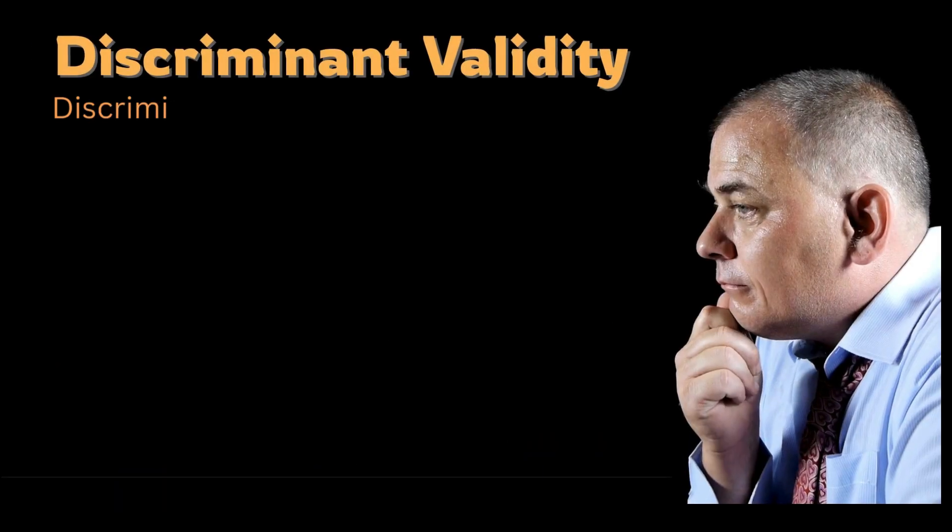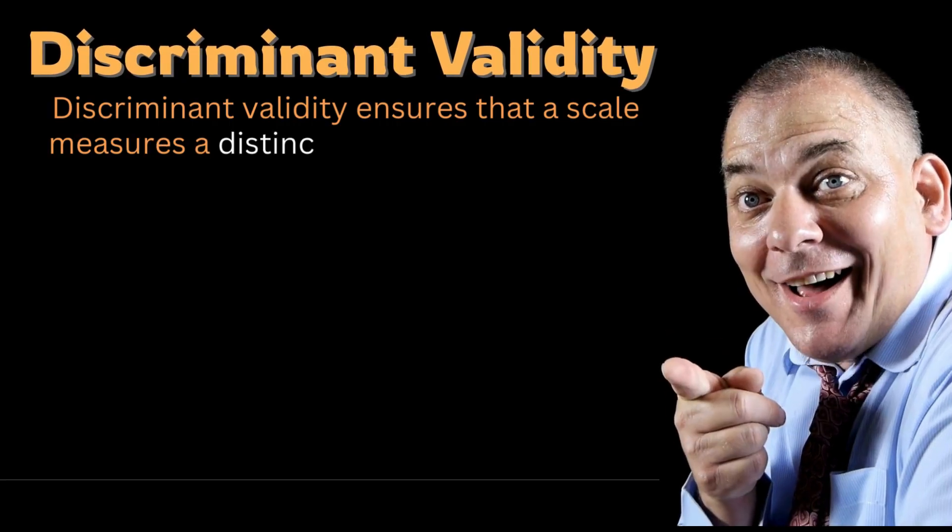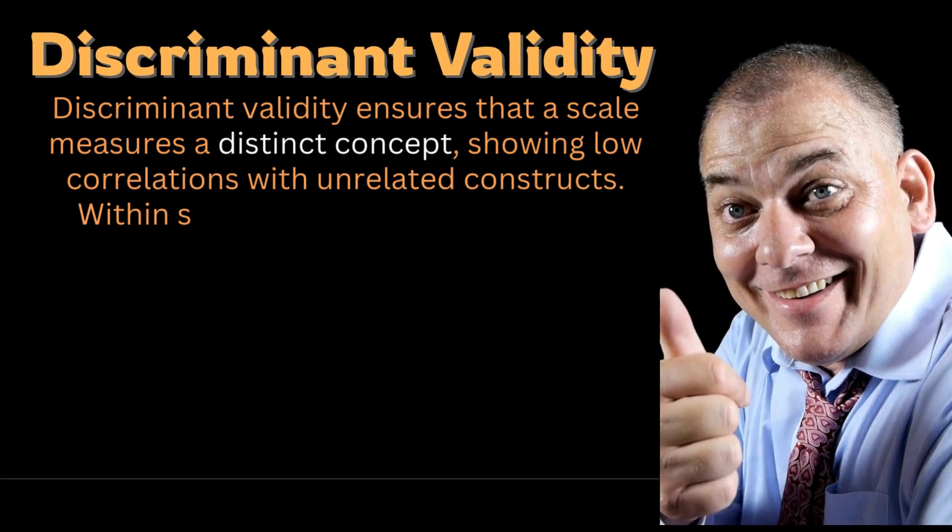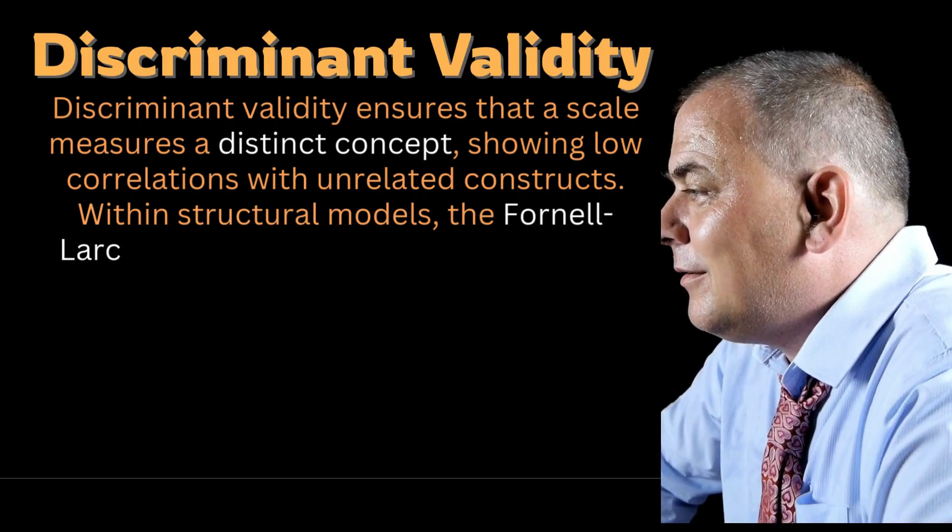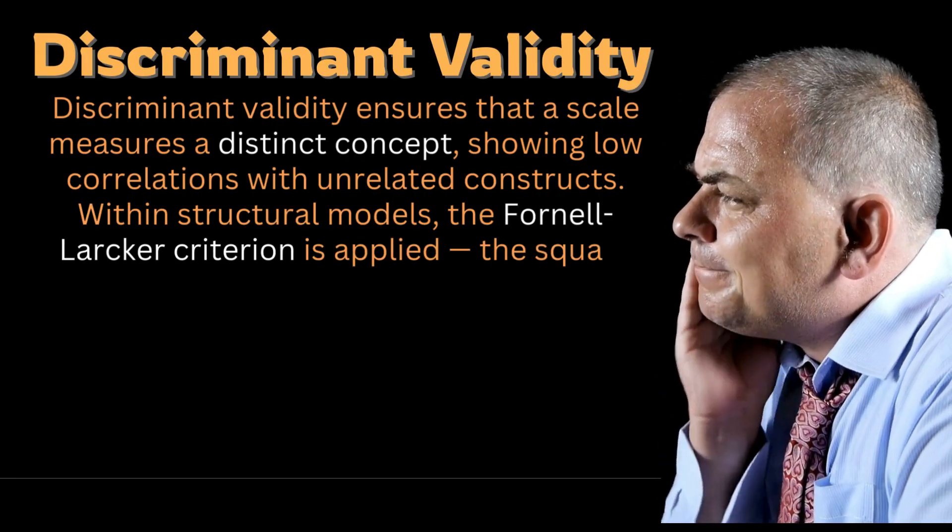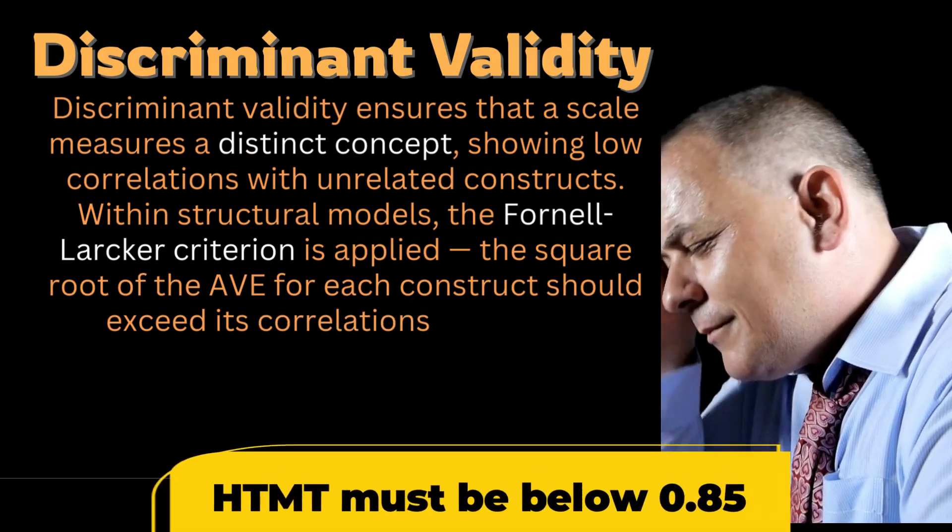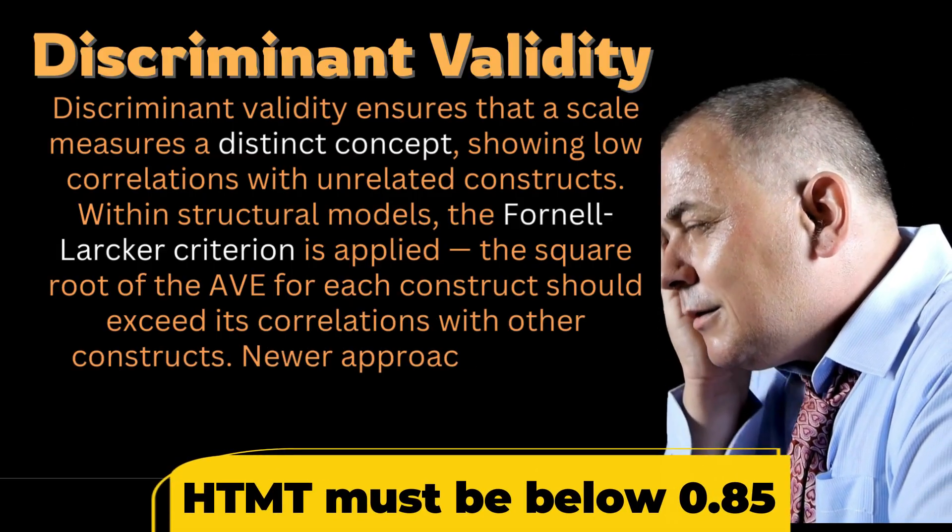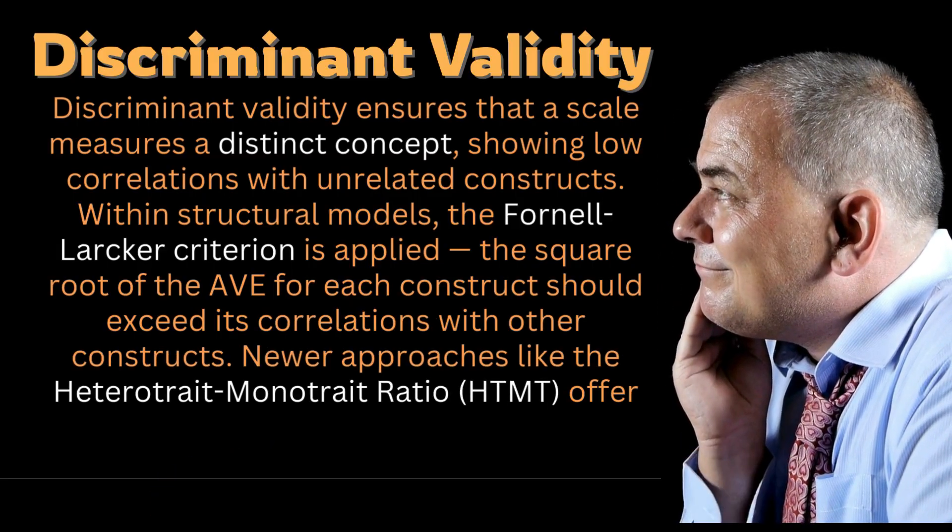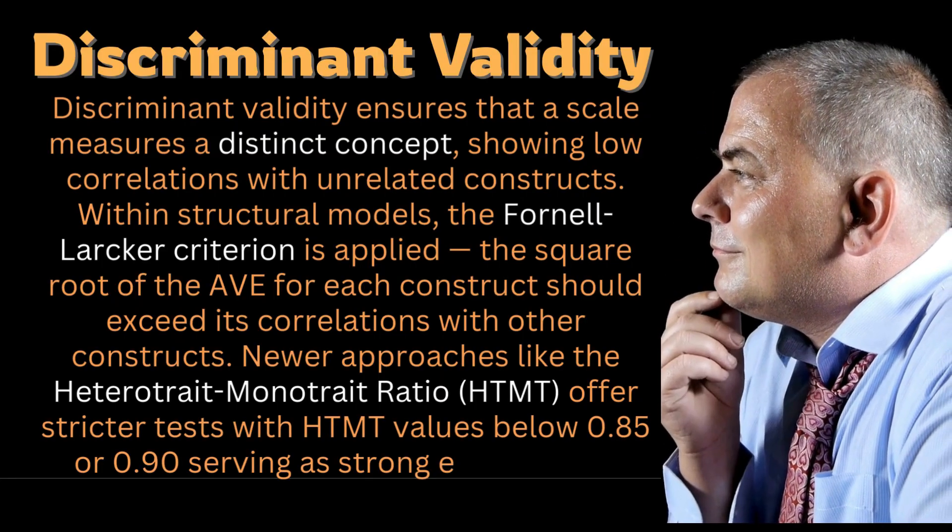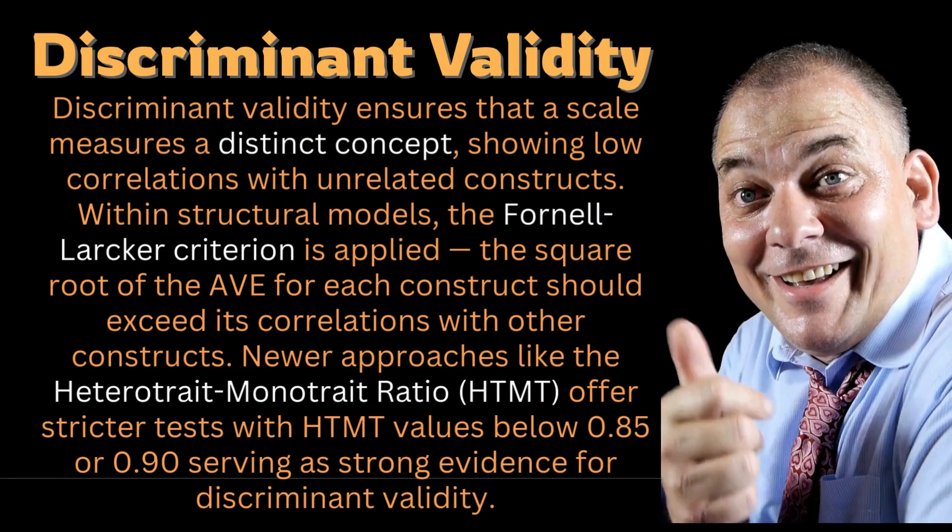Discriminant validity ensures that a scale measures a distinct concept, showing low correlations with unrelated constructs. Within structural models, the Fornell-Larcker criterion is applied. The square root of the AVE for each construct should exceed its correlations with other constructs. Newer approaches like the HTMT offers stricter tests. HTMT values below 0.85 or 0.9 serve as strong evidence for discriminant validity.